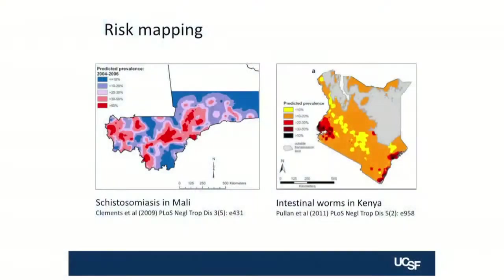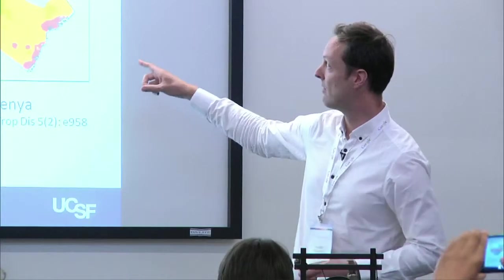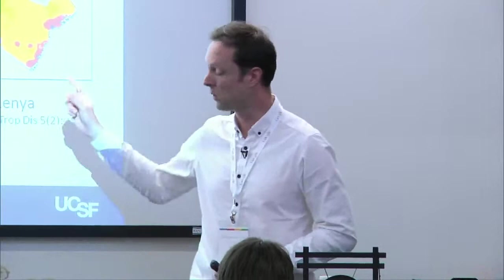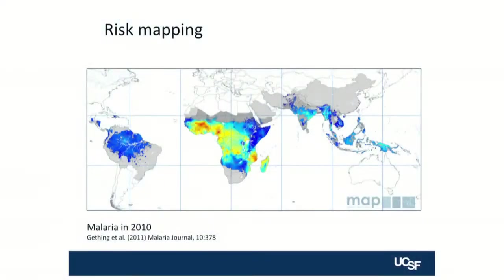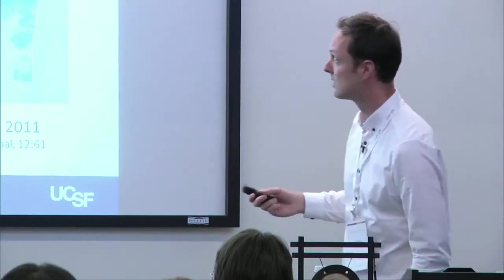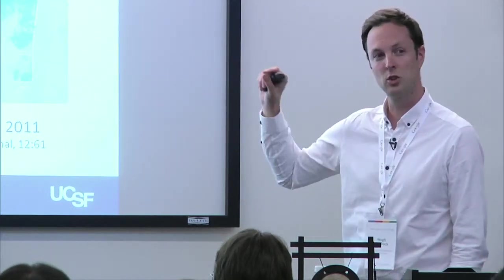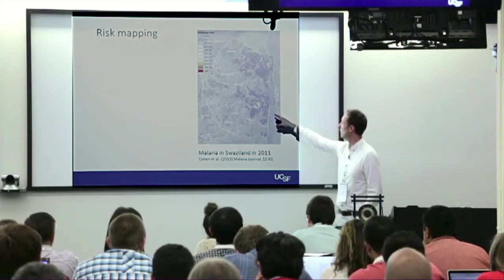Now with the advent of remotely sensed data, there are numerous examples of risk maps. On the left here, this is a map of schistosomiasis, a nasty worm infection in Mali, which uses environmental variables like temperature and distance to water bodies. Over here we have a risk map of intestinal worms in Kenya by colleagues at London School. In the malaria space, there's been a lot of work on risk maps. This is a map from the Malaria Atlas Project, a fantastic group that have put together survey data on malaria to produce a global picture of malaria prevalence. At smaller scales, colleagues at the Clinton Health Access Initiative have gone down to much finer resolution to predict malaria in Swaziland, and you can see there are really small hotspots of risk in certain areas of the country.